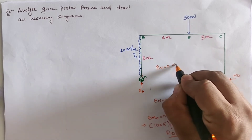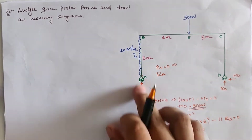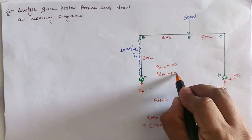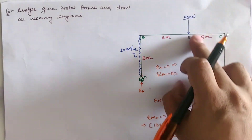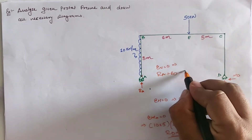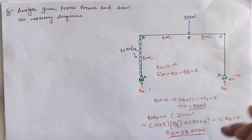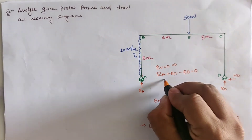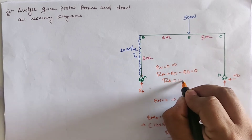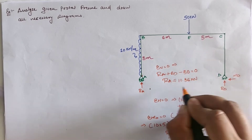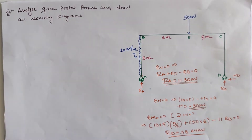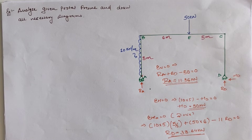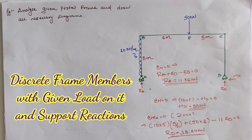The third equilibrium equation is sigma V = 0: RA upward plus RD upward minus 50 kN downward equals zero. Substituting RD = 38.64 kN, we get RA = 11.36 kN. So the first step is to find the support reactions using the three equilibrium conditions. The next step is to split the frame into its members.